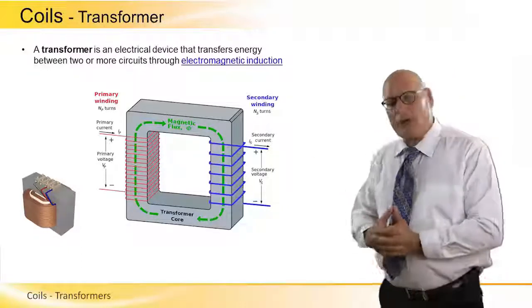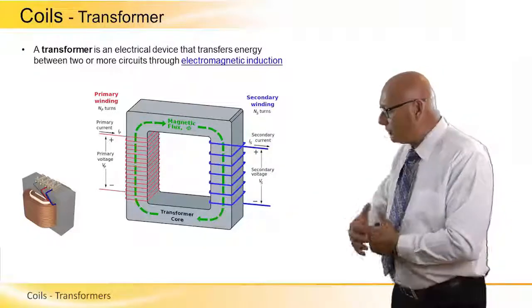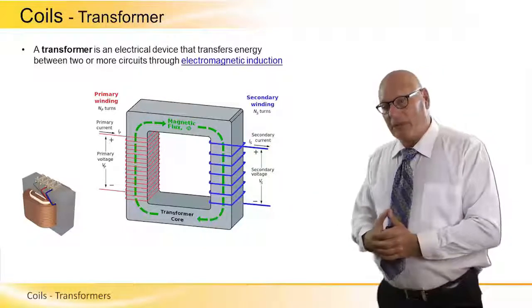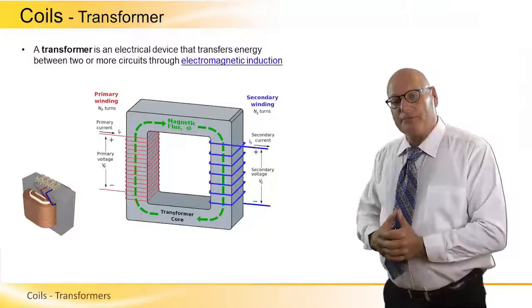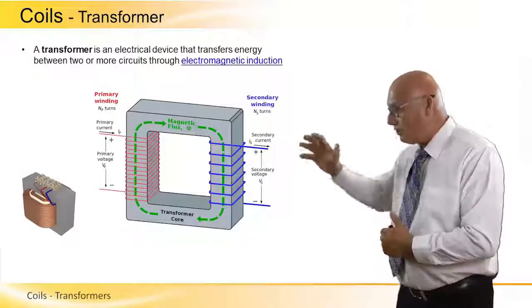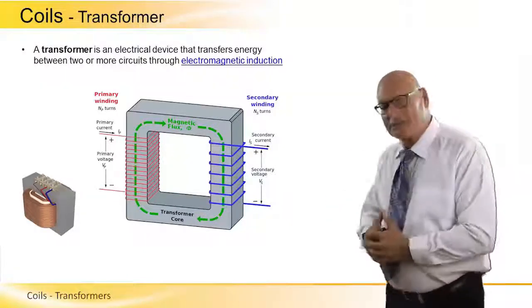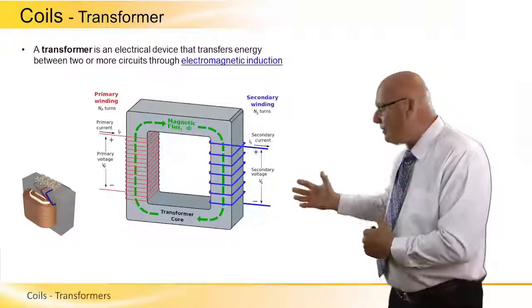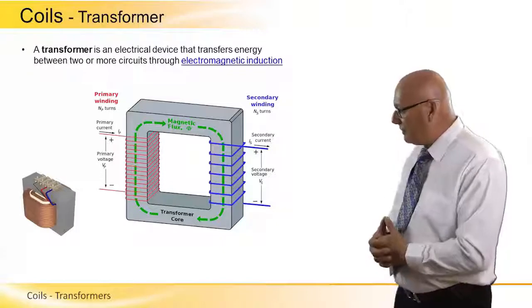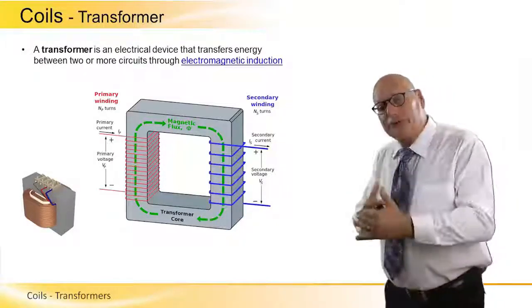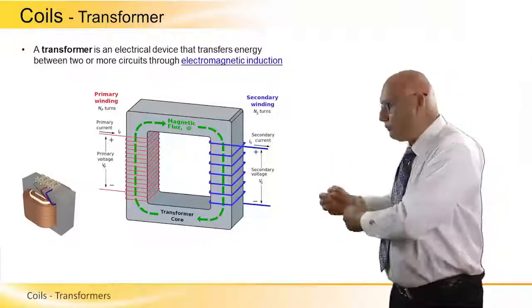To the primary winding, primary coil, we introduce voltage and current. This creates an electromagnetic field, a flux, and we see the direction of the flux. Because it creates a flux, that flux induces current on the secondary coil. And the secondary coil will convert the flux into output voltage and output current.